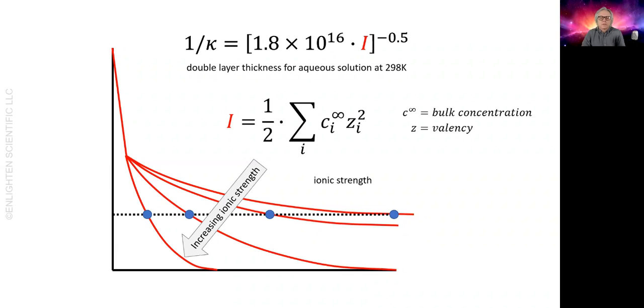So this represents repulsion between particles. How does that fit into the overall picture of colloidal interaction, where you have attraction as well as repulsion?